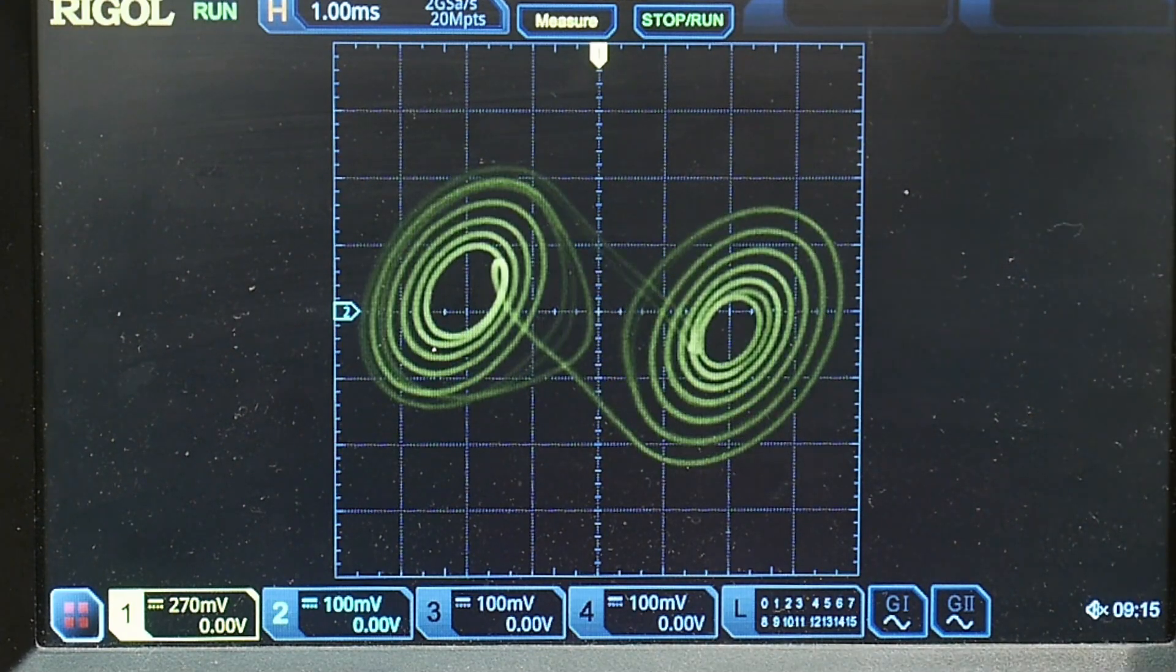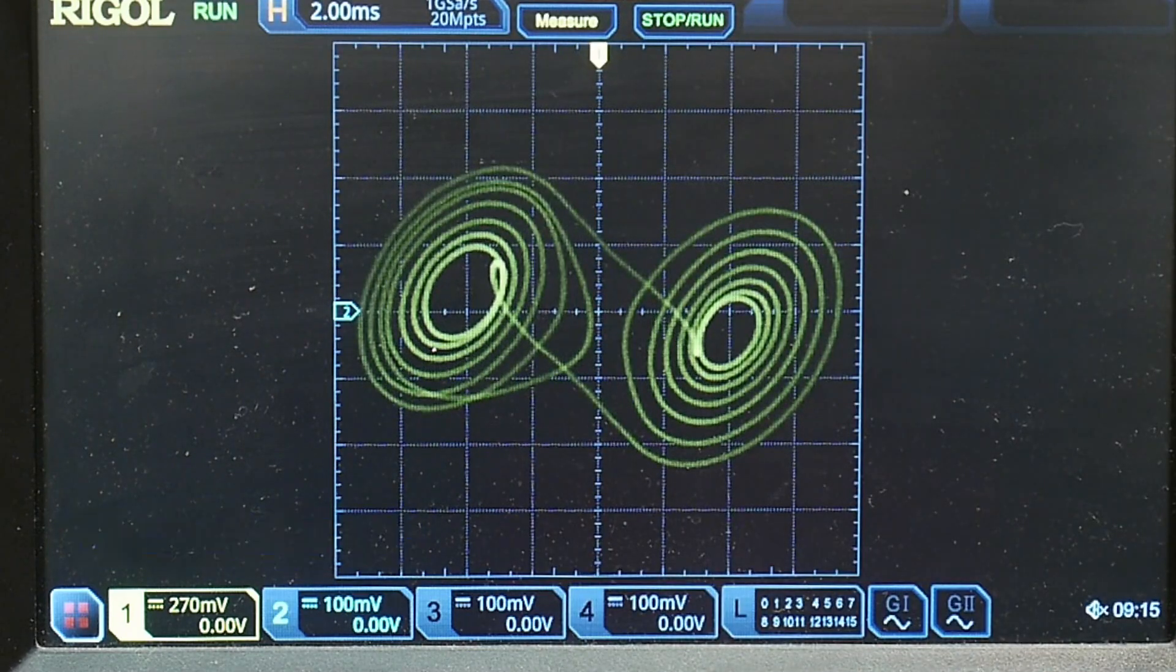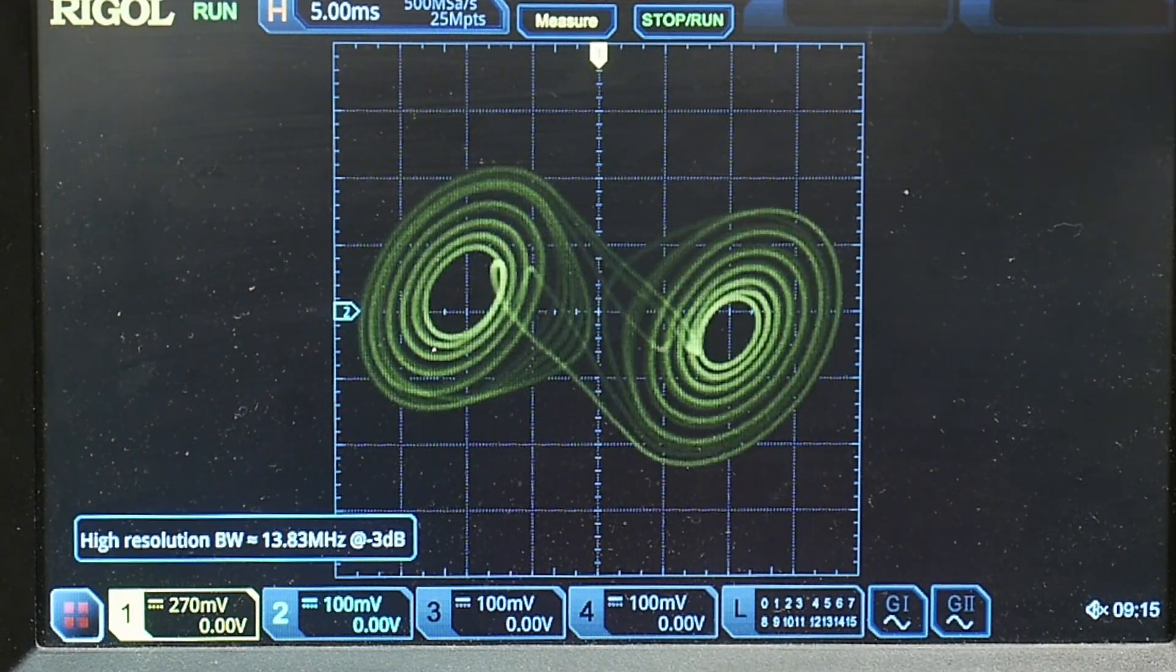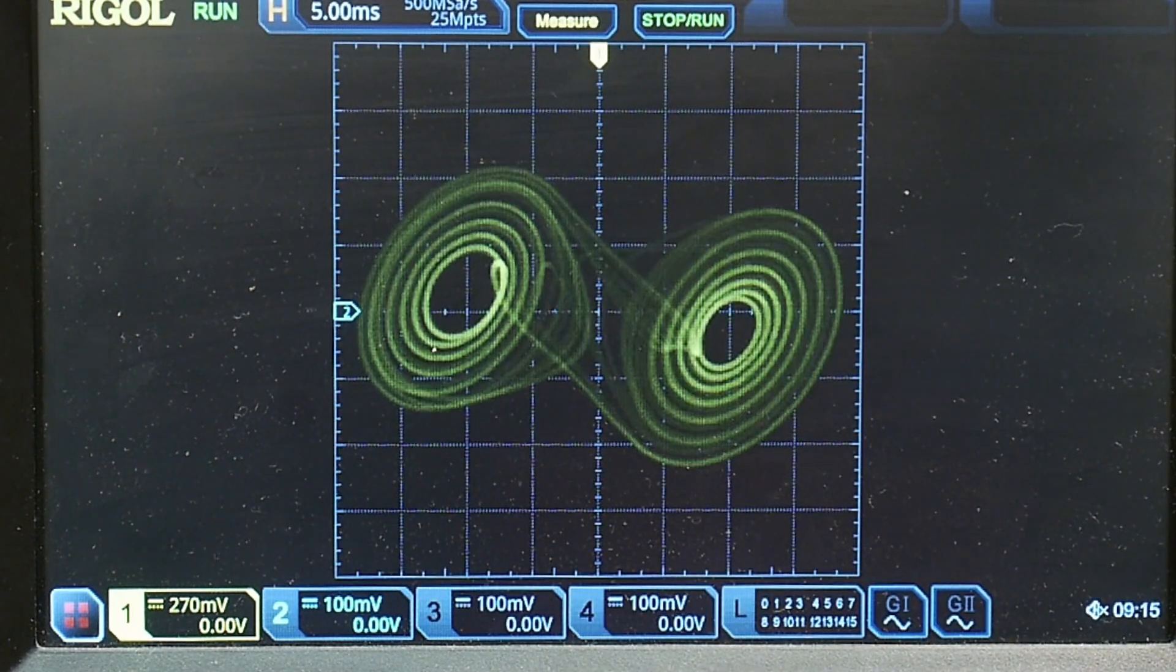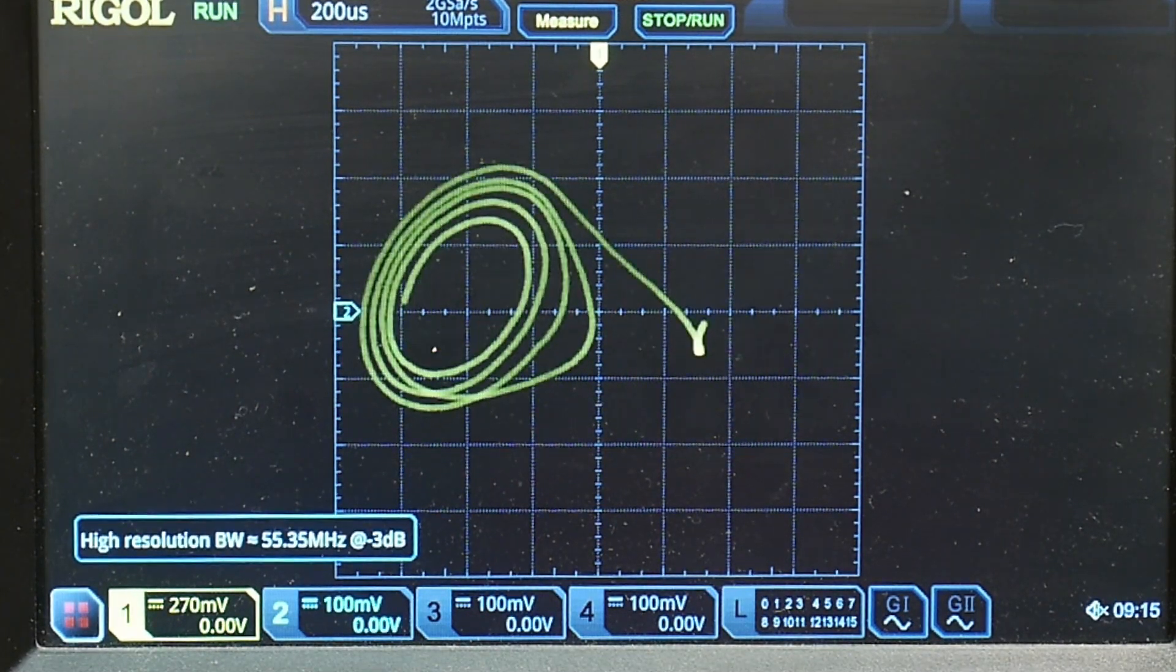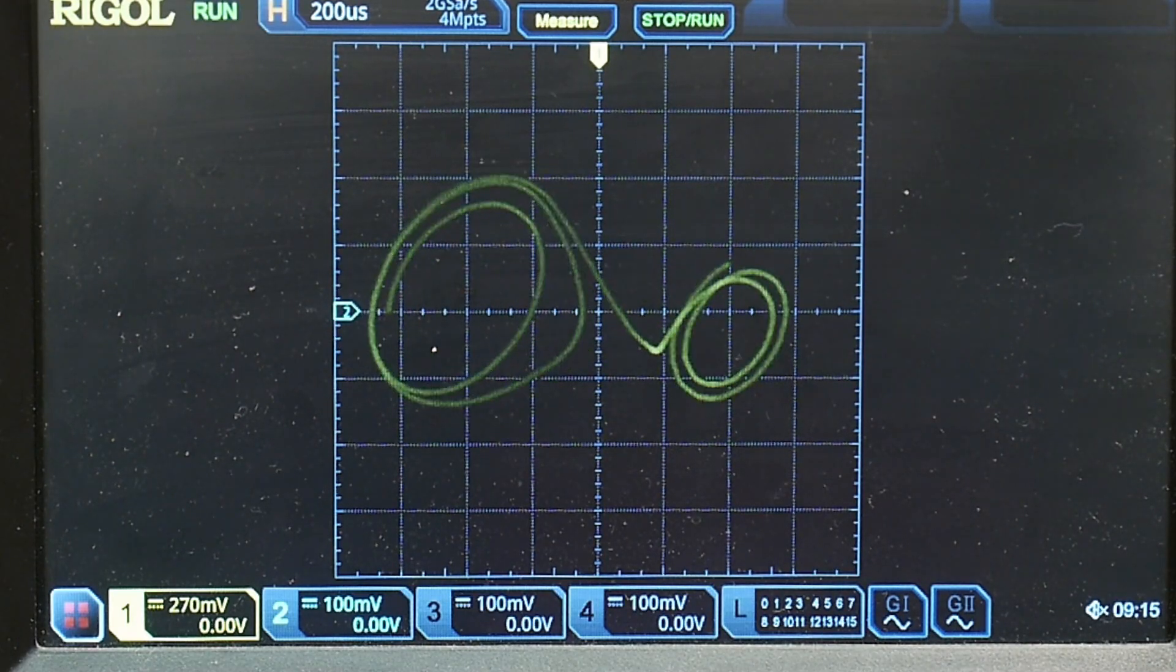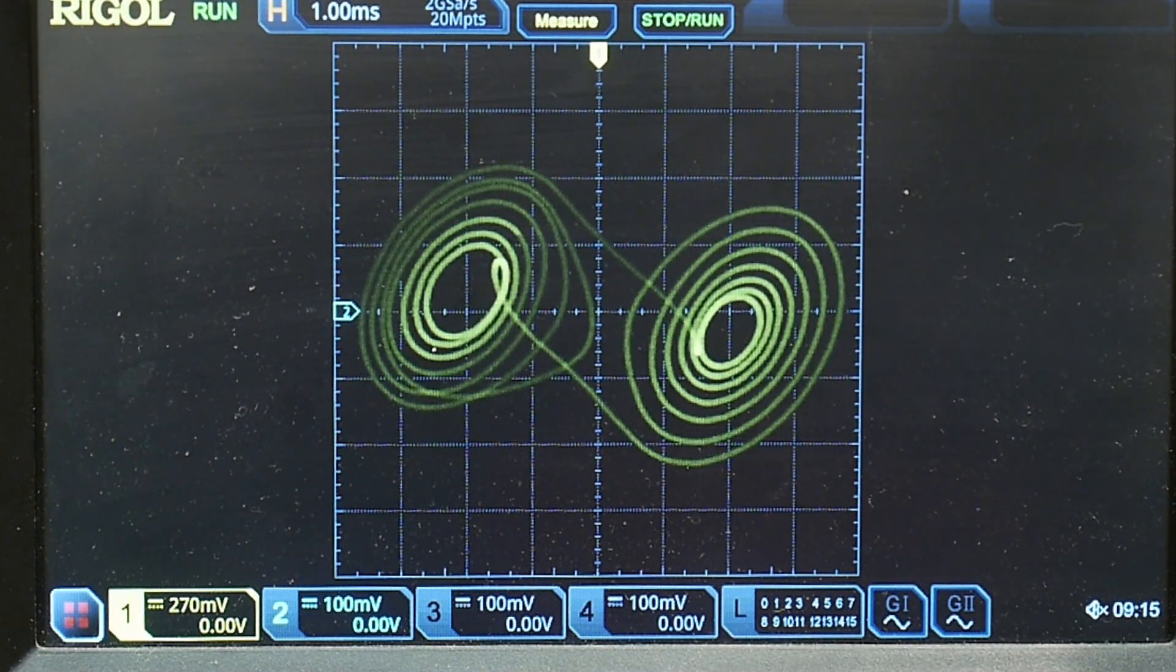Now you can change the time base. So you can accumulate more kind of swirls per trace or you can back it up and only see a few of them which is sometimes interesting too. But yeah there you go.